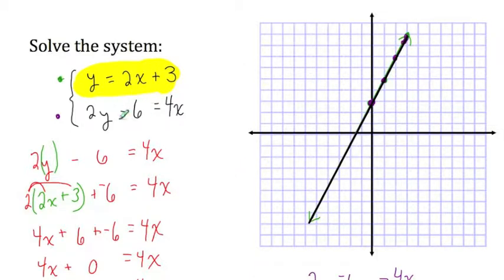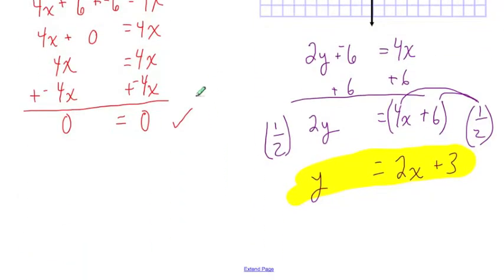And the solutions will be ordered pairs that will satisfy either this one or the other. Because if it satisfies one, it will satisfy the other because they are the same lines. So if I were working this out in a homework problem or on a test, I would simply write that there are an infinite number of solutions.